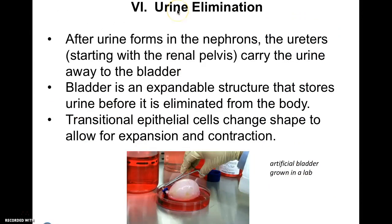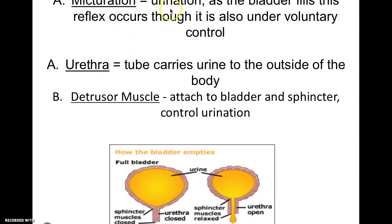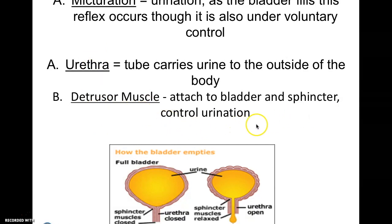For urine elimination: after urine forms in the nephrons, the ureters carry it toward the bladder. The bladder is an expandable structure that stores urine before it is eliminated. Transitional epithelial cells change shape to allow for expansion and contraction — larger when full, smaller when not. The process of urination is called micturition. The bladder fills as a reflex under voluntary control, the urethra carries it away from the body, and detrusor muscles control urination.